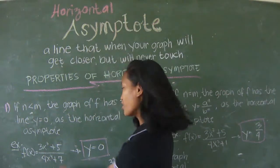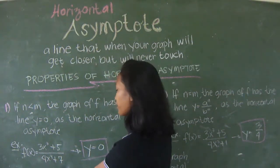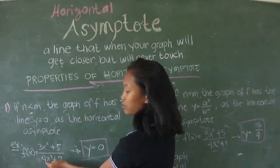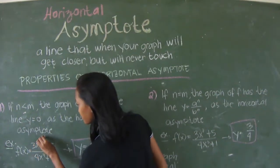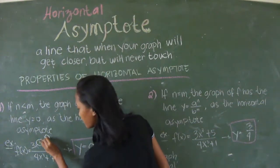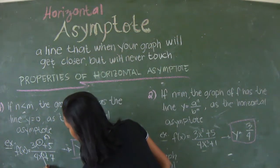Example of this is f of x equals 3x cubed plus 5 over 4x to the power of 4 plus 7. This is the n and this part is m.